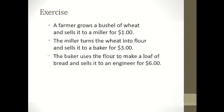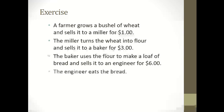The baker uses the flour to make a loaf of bread and sells it to an engineer for $6. Here the final product is the loaf of bread at $6, and the intermediate product is the flour at $3. Subtracting $3 from $6, the value added at this stage is $3. The engineer then eats the bread.